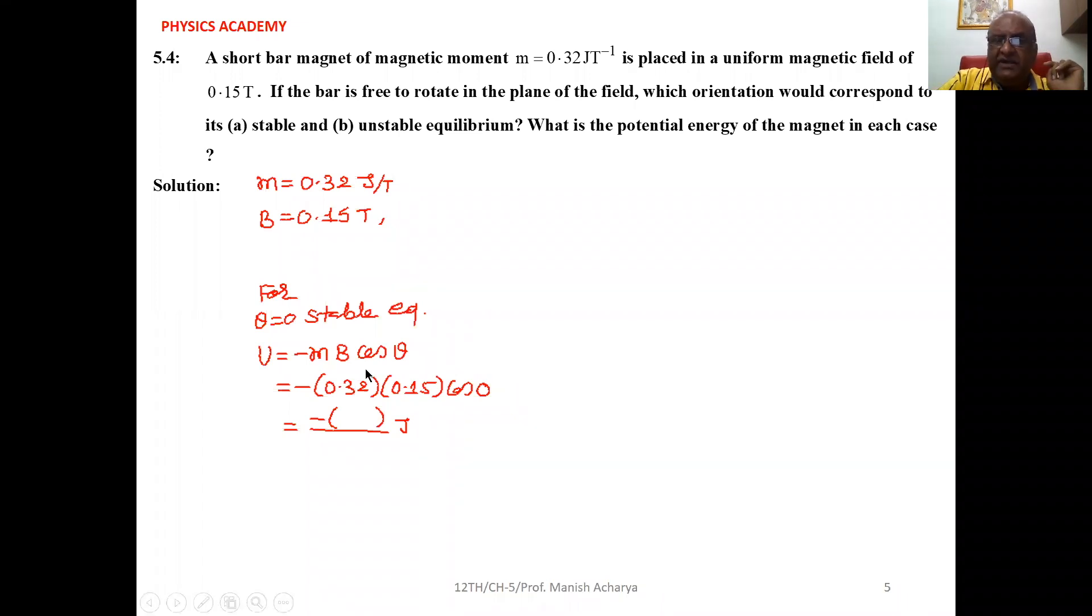In this situation, the potential energy equation is U = -mB cos θ. So U = -(0.32)(0.15) cos 0. Since cos 0 = 1, solving this gives the potential energy in stable equilibrium.